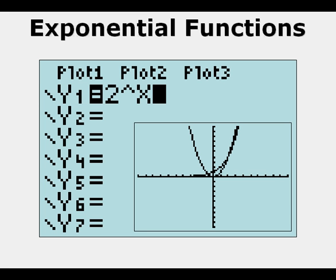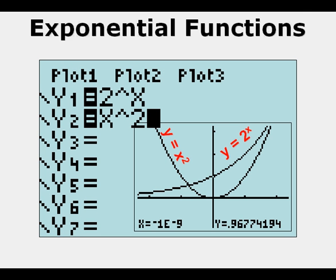If we superimpose over the quadratic parent function, and now we zoom in on it, we can see the different appearance. That's just by swapping the x and the 2.